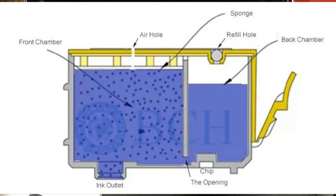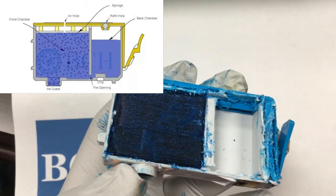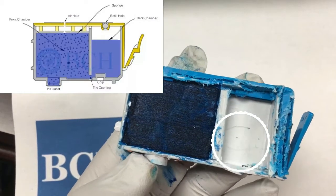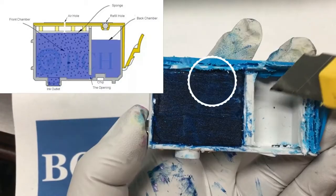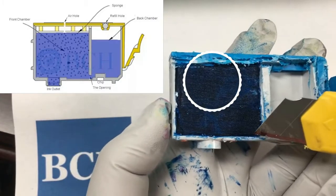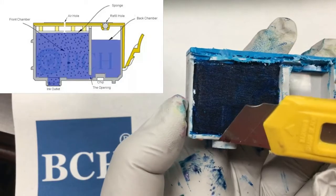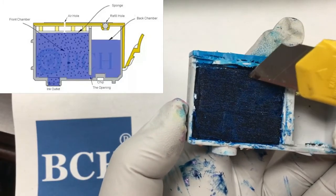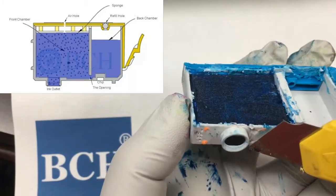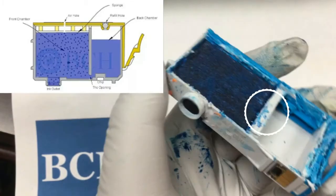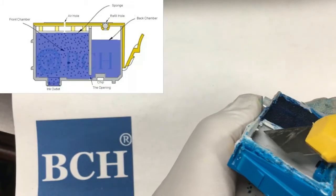A twin chamber cartridge is divided into two chambers. The back chamber is designed as an ink reservoir. The front chamber is filled with sponges. The sponge regulates the ink flow to the outlet on the bottom. The two chambers are divided by a wall.